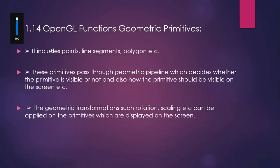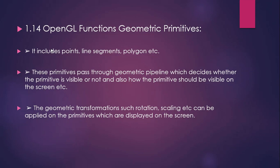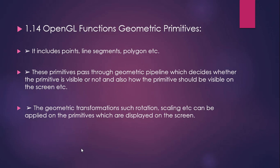OpenGL has functions for geometric primitives such as points, line segments, and polygons. Geometric primitives are the basic objects — points, lines, and polygons — and there are specific OpenGL functions for all of them. These primitives pass through a geometric pipeline which decides whether the primitive is visible and how it should be displayed on the screen.